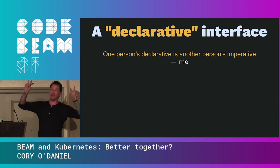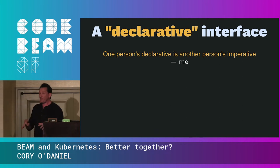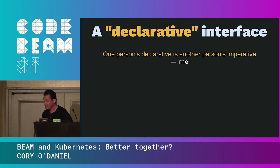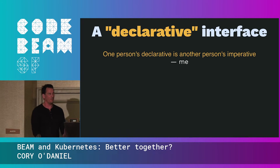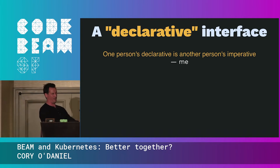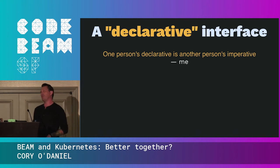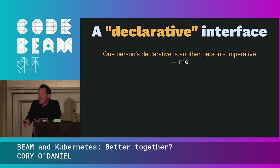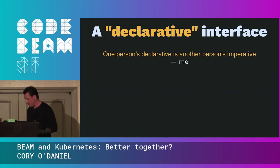It has a declarative interface. I truly believe one person's declarative is another person's imperative. Kubernetes has gotten really complicated, and now our manifests are a lot of 'how' rather than 'what we wanted.' RAM down to the kilobytes. Fractions of a CPU. There's so much stuff that we're telling Kubernetes how to do things, and that feels leaky and puts an operational overhead on application developers.